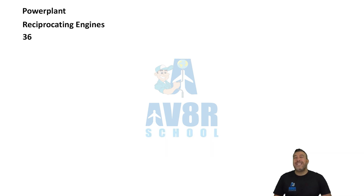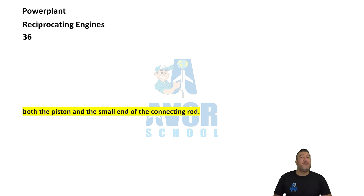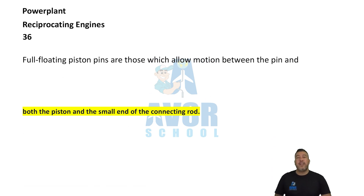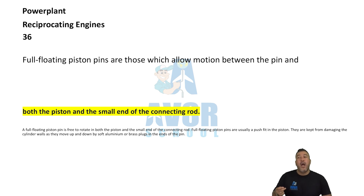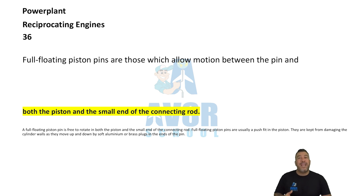Number 36. Full floating piston pins are those which allow motion between the pin and both the piston and the small end of the connecting rod.